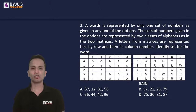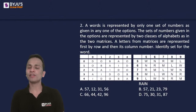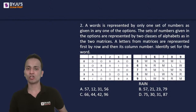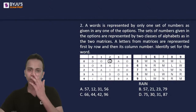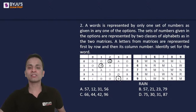Question number two is a grid-based question. A word is represented by only one set of numbers as given in any one of the options. The sets of numbers given in the options are represented by two classes of alphabets as in the two matrices. A letter from the matrix is represented first by the row and then by the column. For example, if I want to represent alphabet B, it can be written as 0,2 or 1,1 or 4,3. There are multiple ways in which alphabet B can be represented.